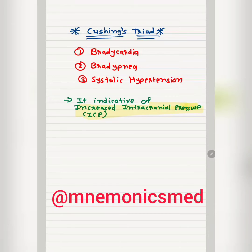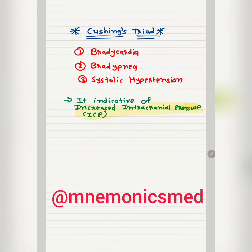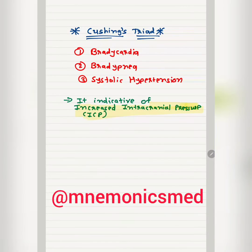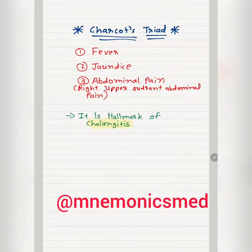Cushing's Triad has three components: bradycardia, bradypnea, and systolic hypertension. It is indicative of increased intracranial pressure. You have to remember these three things — bradycardia, bradypnea, and systolic hypertension — in Cushing's Triad.